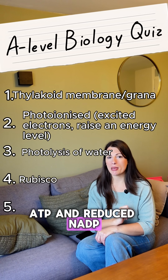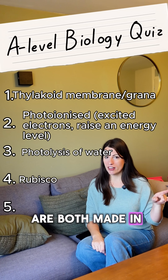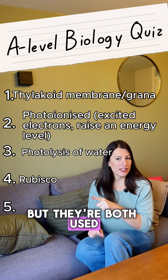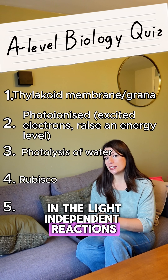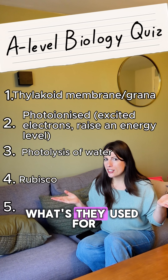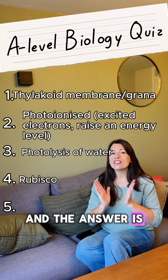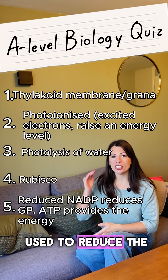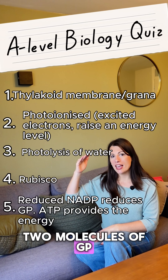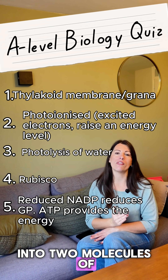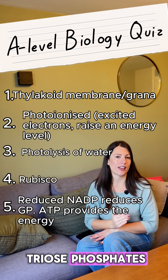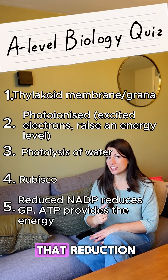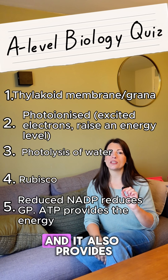And finally, question five: ATP and reduced NADP are both made in the light dependent reactions, but they're both used in the light independent reactions. What are they used for? The answer is the reduced NADP is used to reduce the two molecules of GP into two molecules of triose phosphate.